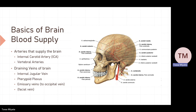Our brain is a very energy-hungry organ. It constantly requires glucose, oxygen, and other nutrients for its metabolism and function, and it lacks its own storage of these nutrients. It receives about 15% of the blood pumped out by the heart every minute. The blood supply to the brain is therefore very crucial, and there are essentially four arteries that supply the brain: two internal carotid arteries and two vertebral arteries.